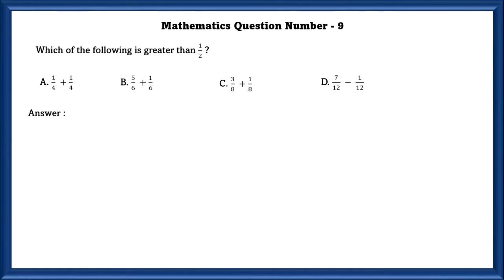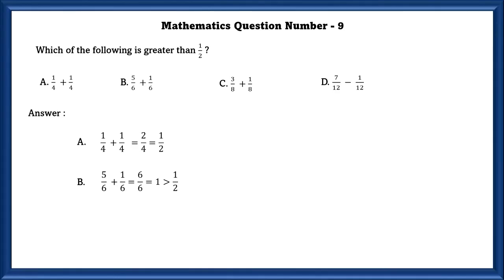Mathematics question number 9. Which of the following is greater than 1/2? Checking option A: 1/4 + 1/4 = 2/4 = 1/2. But the question asks which is greater than 1/2, so this option is not valid. Option B: 5/6 + 1/6 = 6/6 = 1, which is greater than 1/2. So option B is correct.